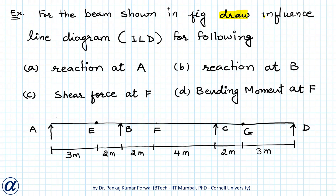In this question we want to draw influence line diagrams for the beam shown in the figure for reaction at A, reaction at B, shear force at F, and bending moment at F. Because we have internal hinges at E and G, the beam becomes statically determinate. When we draw an influence line diagram for a statically determinate beam using Müller-Breslau principle, it displaces like a mechanism.